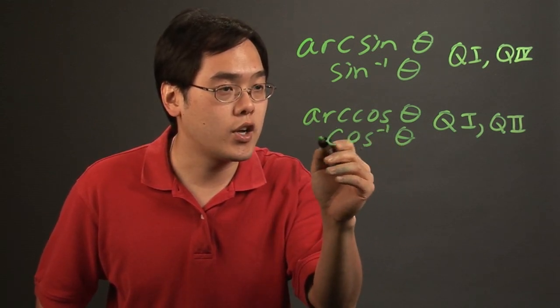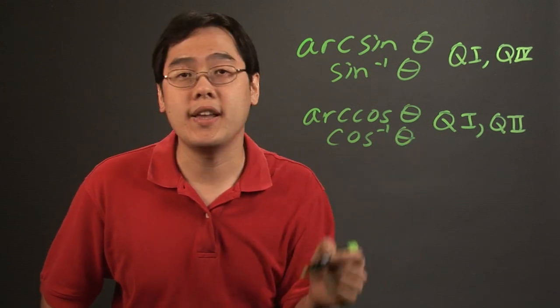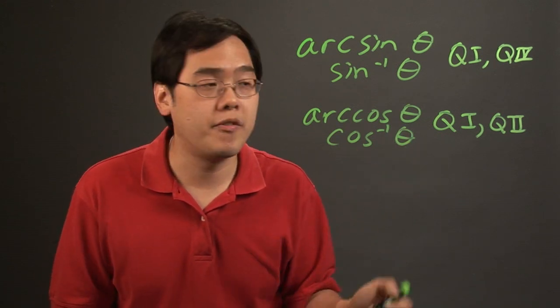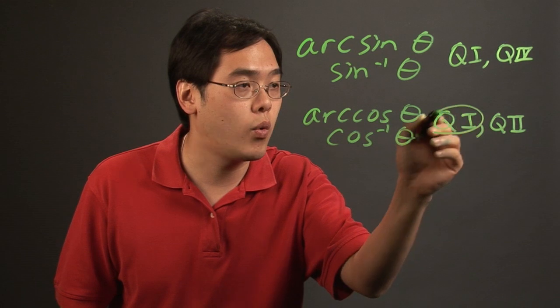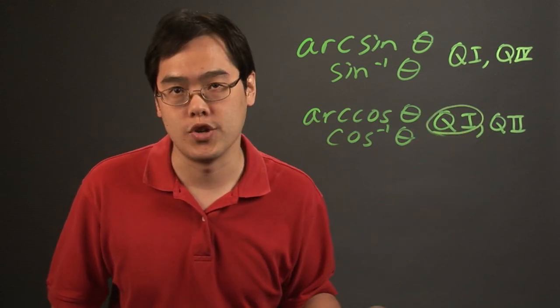So when you want to find the cosine inverse of a value to find the angle, again, what a calculator will provide you is more often than not it will give you the quadrant 1 angle, it's up to you using reference angles to find the quadrant 2 solution.